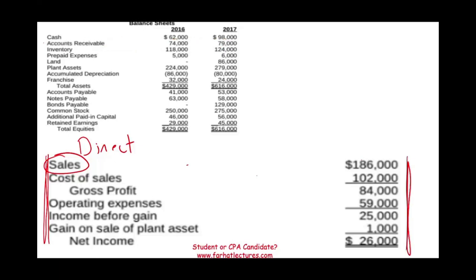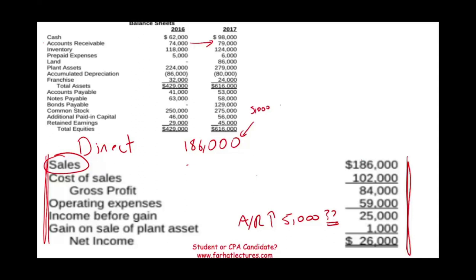You are given the balance sheet account, and you notice that accounts receivable went from 74 to 79. So you are starting with accrual sales of 186. Your accounts receivable overall went up by 5,000. What does it mean when your accounts receivable increases? It means you are selling more on credit. Embedded in this 186,000 is an additional $5,000 of credit sales. From a T-account perspective, if you're analyzing accounts receivable, this is what we have.